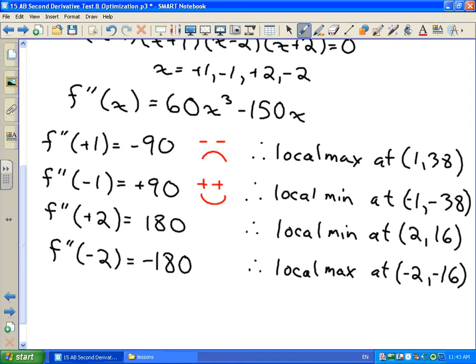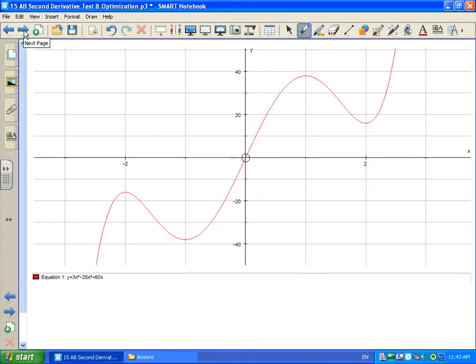So just subbing those numbers into the formula lets you know whether you've got local max or local min. And we can always confirm this just by taking a look at what our function would actually look like. Got a graph of it sitting right here. Notice this is just going sort of up and down as we go along, so we've got local max, local min, local max, local min. And that's the second derivative test.